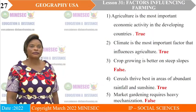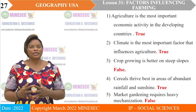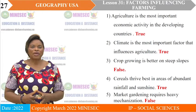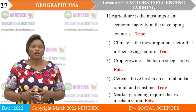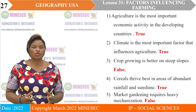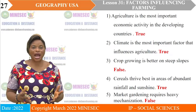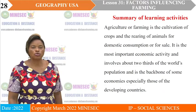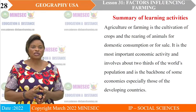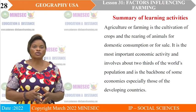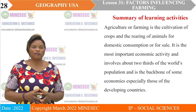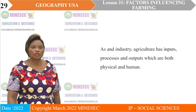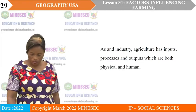For the exercise: agriculture is the most important economic activity in the developing countries — true. Climate is the most important factor that influences agriculture — true. Crop farming is better on steep slopes — false, because there are shallow soils. Cereals thrive best in areas of abundant rainfall and sunshine — very true. Market gardening requires heavy mechanization — not true. Summary: agriculture is the cultivation of crops and rearing of animals for domestic consumption or for sale. It is the most important economic activity, involves about two-thirds of the world's population, and is the backbone of some economies, especially those of the developing countries. As an industry, agriculture has inputs, processes, and output.